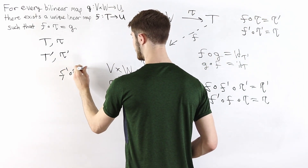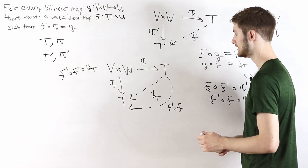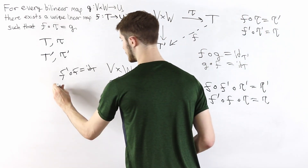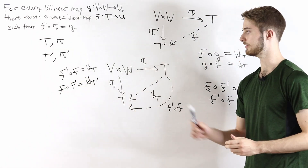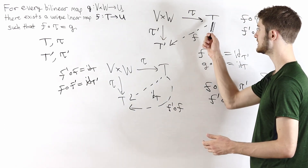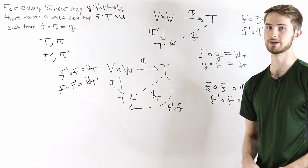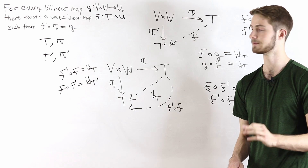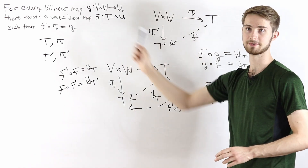Since the universal property guarantees uniqueness — exactly one linear map from T to T such that that map composed with tau equals tau — these two maps must be equal. Therefore f prime composed with f equals the identity on T. By the same argument with T and T prime switched, f composed with f prime equals the identity on T prime. This means f prime is the two-sided inverse of f, so f is an isomorphism, and therefore T and T prime are isomorphic, proving the tensor product is unique.